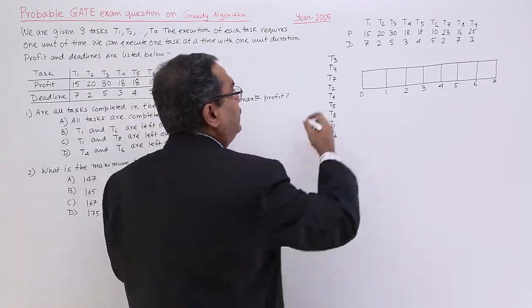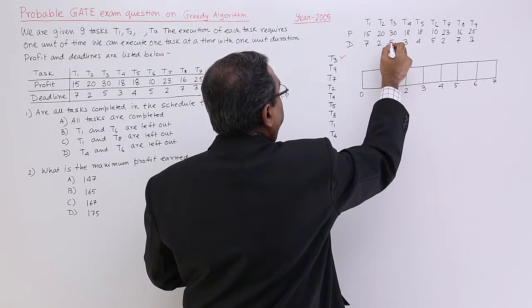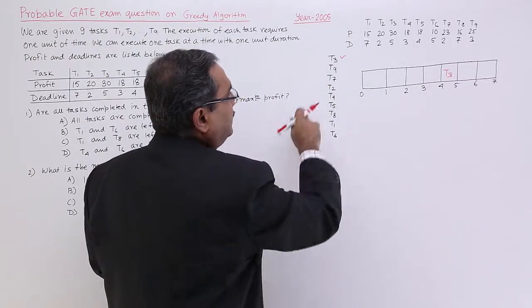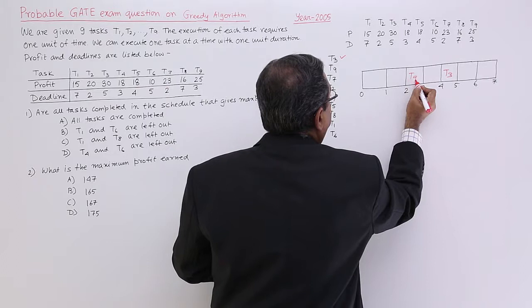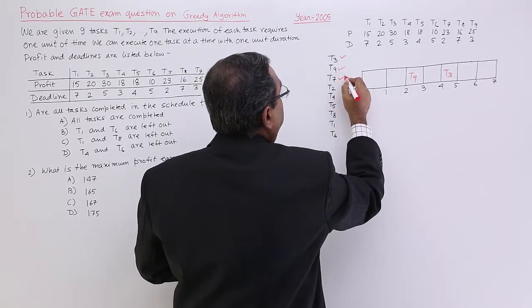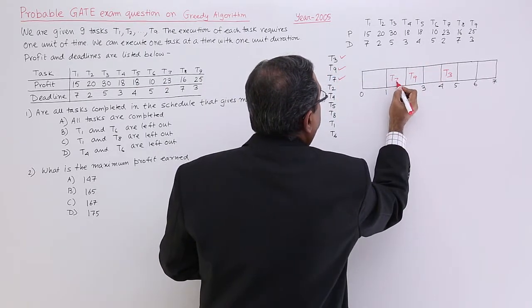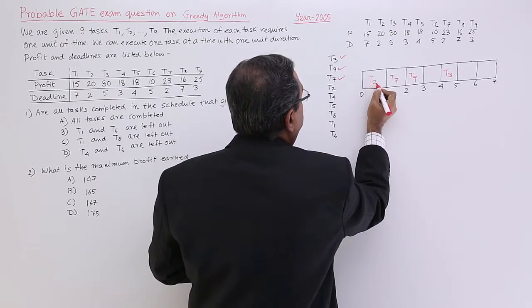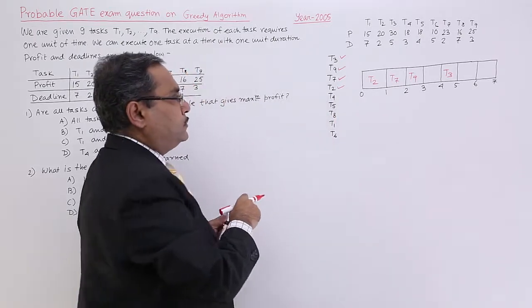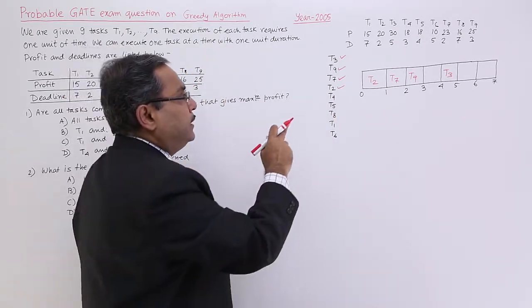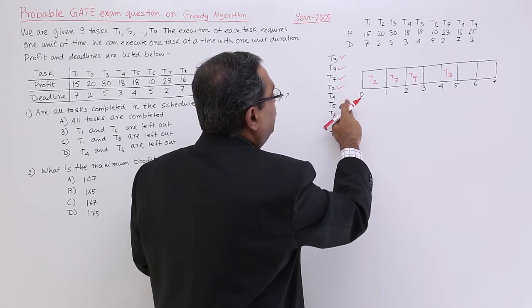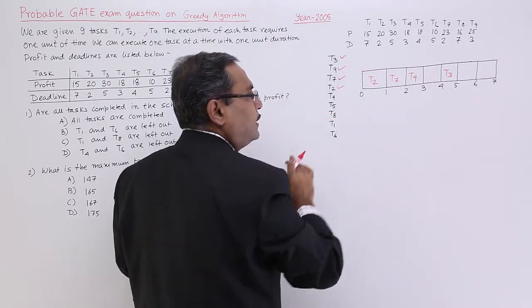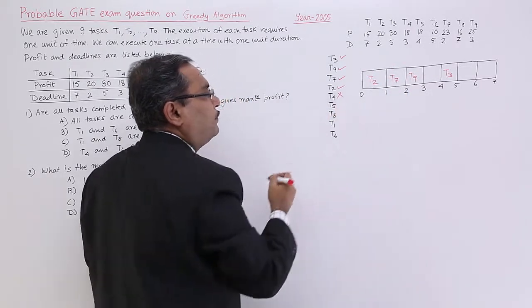At first, I am going for T3. T3 has deadline 5, so in the fifth slot I shall be placing T3. Then T9, T9's deadline is 3. Then T7, T7 has deadline 2. It can come forward, it can be done earlier, so I am allocating it to slot number 1. Now I am going for T4. T4 should be allocated to slot number 3, but here you see there is no slot vacant for T4. T4 cannot be fitted.